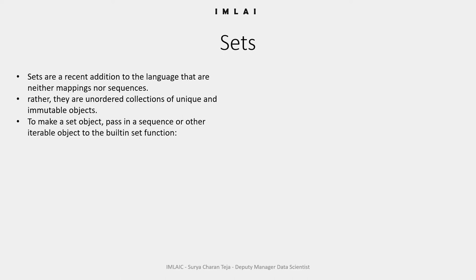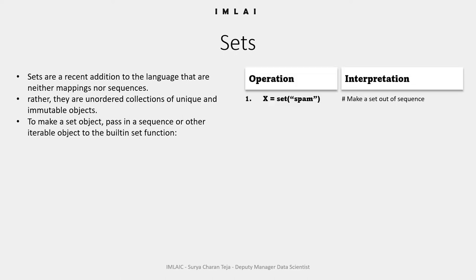Sets are created by calling the built-in set function or using the new set literals and expressions in Python 3.0, and they support the usual mathematical set operations. To generate a set object, pass in a sequence or other iterable object — for us, 'spam' is an iterable string object — to the built-in set function.